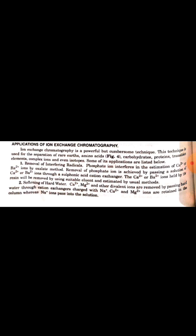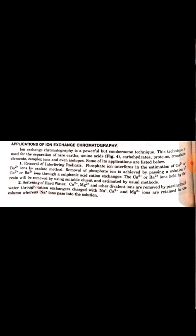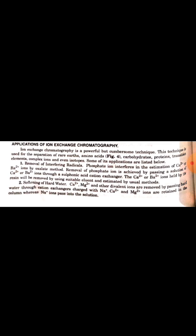First, removal of interfering radicals. Phosphate ion interferes in the estimation of calcium or barium ions by oxalate method. Removal of phosphate ion is achieved by passing a solution of calcium or barium ions through a sulfonic acid cation exchanger. The calcium or barium ions held by the resin will be removed by using suitable eluant and can be estimated.